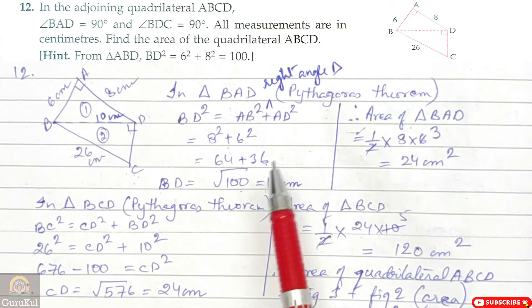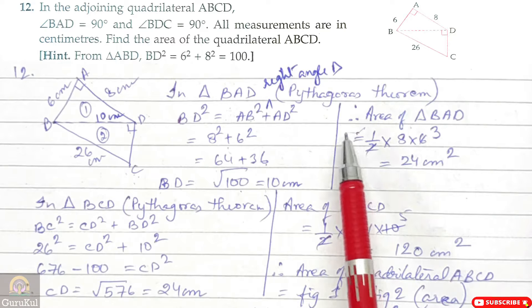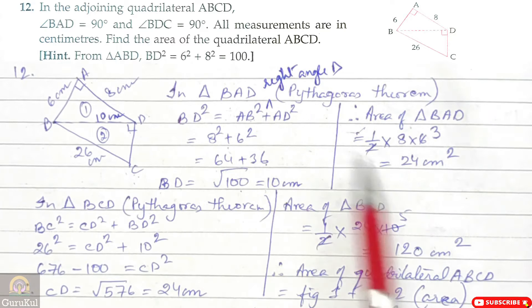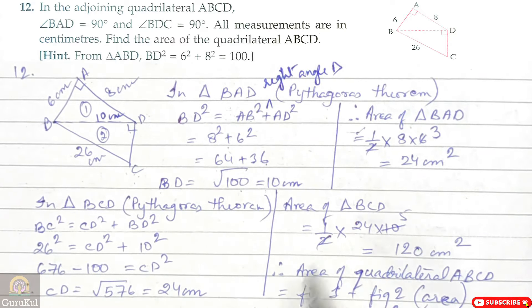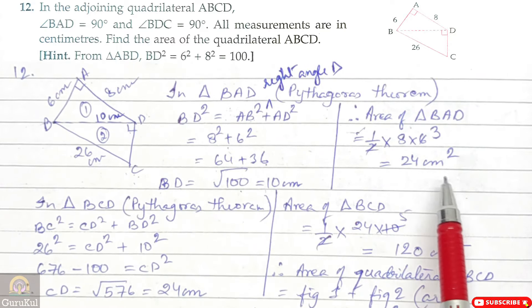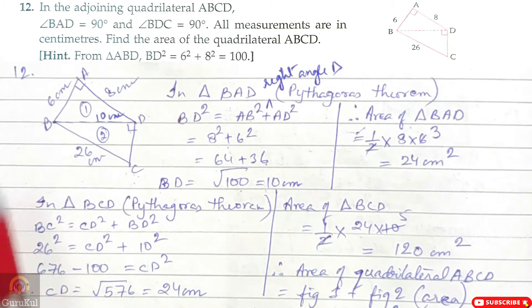Area of figure 1 (triangle BAD) = half × base × height = half × 6 × 8 = 24 cm². Triangle 1 is solved.